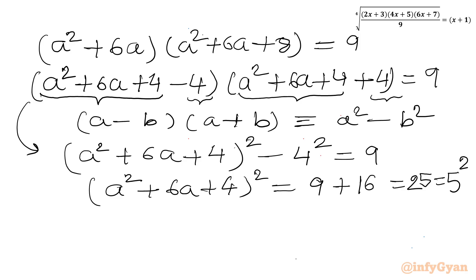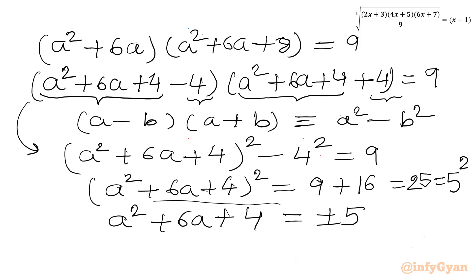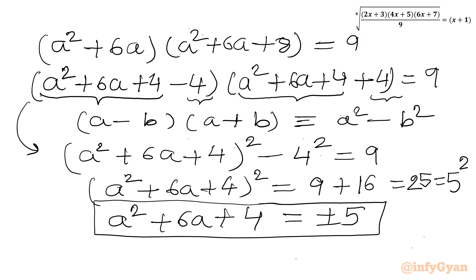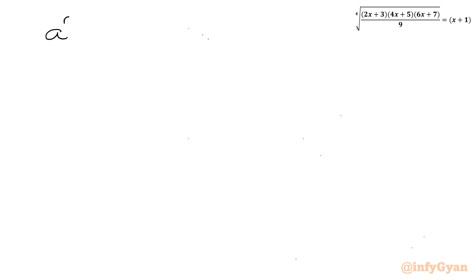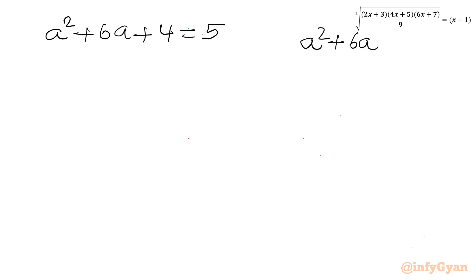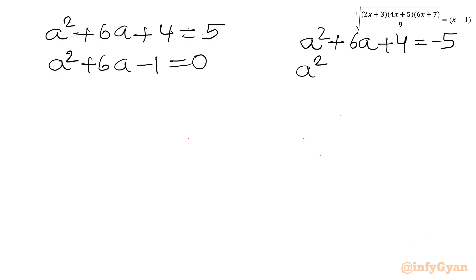This generates two quadratic equations. The first: a²+6a+4 = 5, which simplifies to a²+6a−1 = 0. The second: a²+6a+4 = −5, which gives a²+6a+9 = 0.